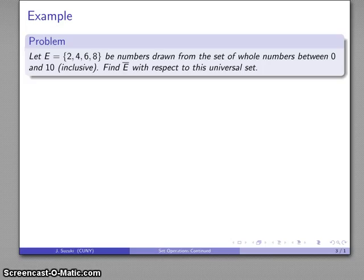For example, let's take that set E equal 2, 4, 6, 8, and let's assume that in this case they are numbers drawn from the set of whole numbers that range between 0 and 10 inclusive, which is to say including 10, including 0. So I've defined what that universal set is.